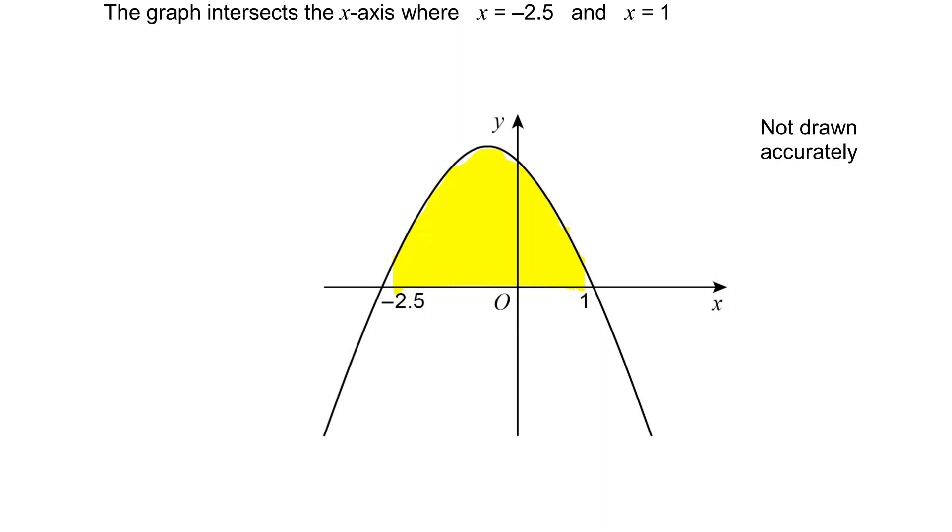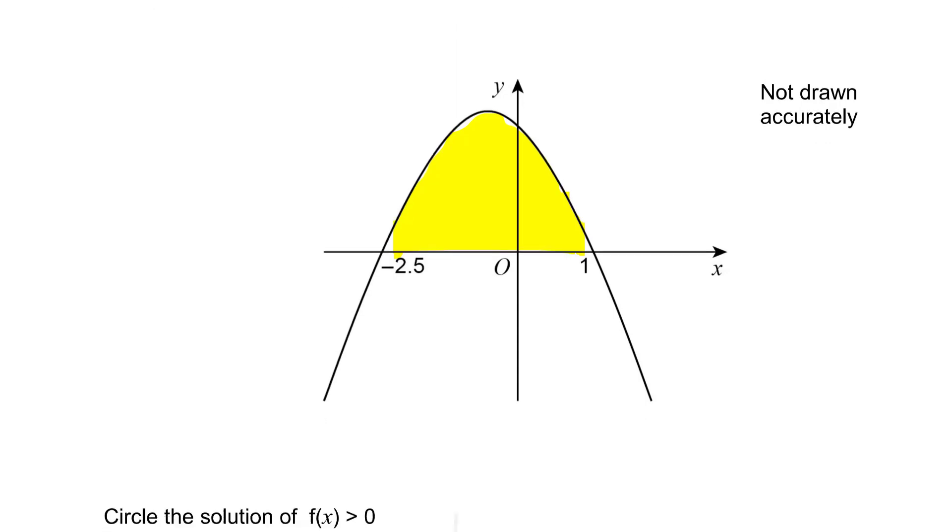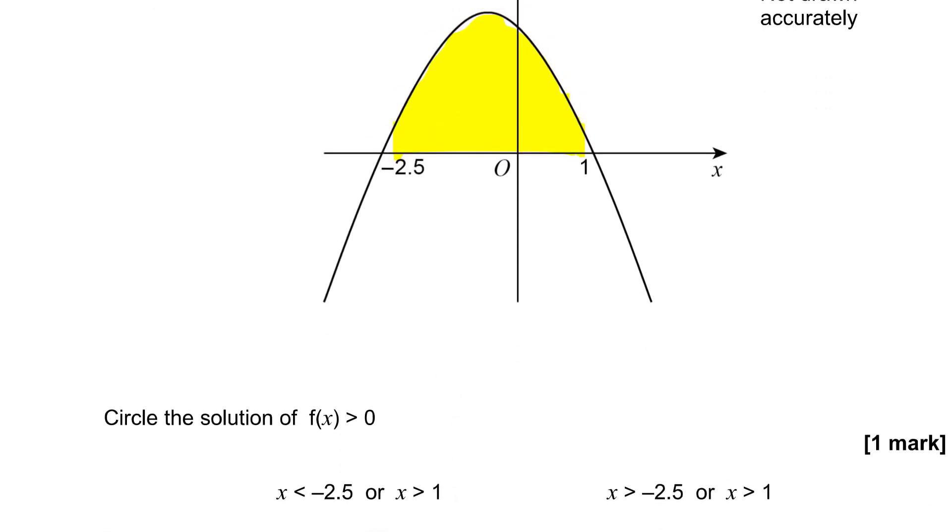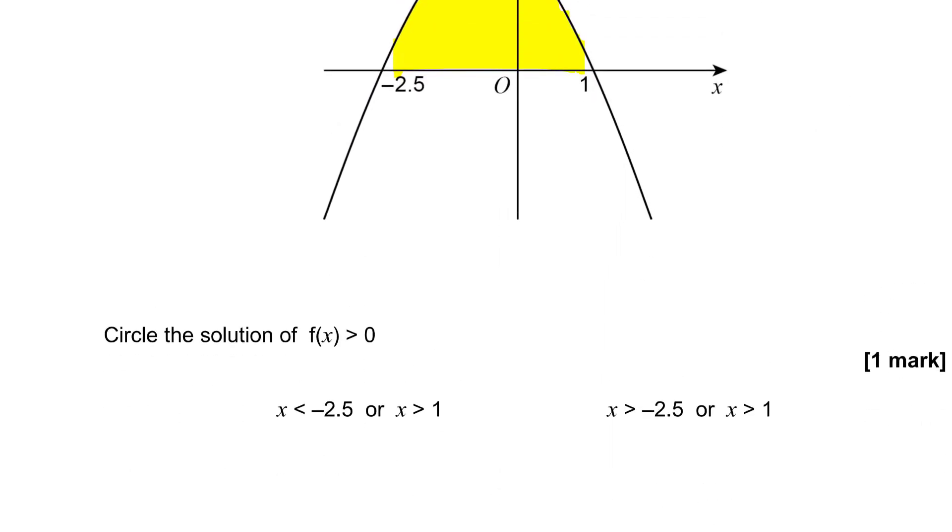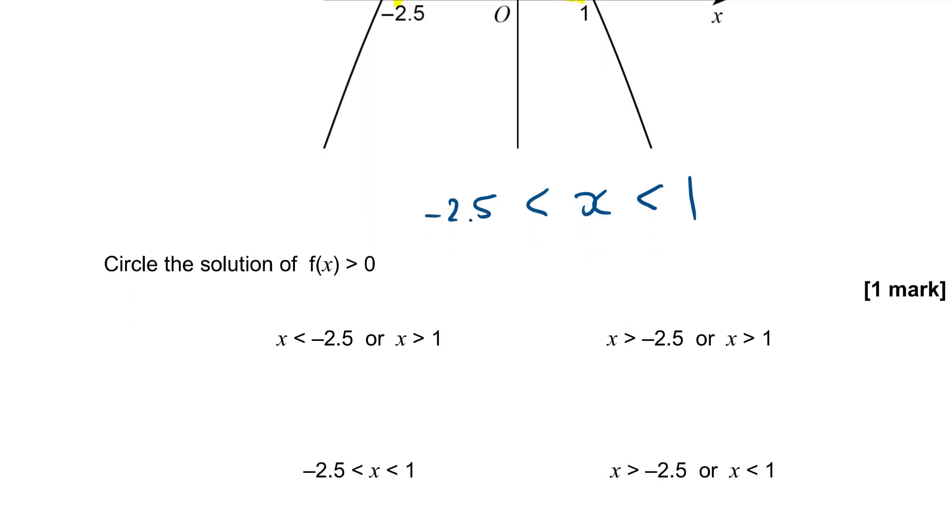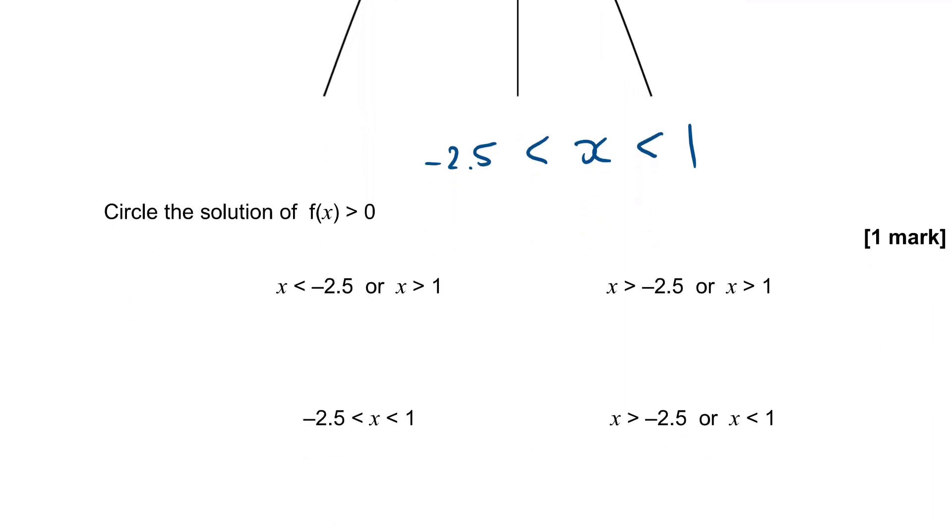But between minus 2.5 and 1, f of x is positive. So which boundary is it? Our value of x has to be bigger than minus 2.5. Can't be equal to 2.5 because then it would be equal to 0, and it's strictly greater than 0. And it must be strictly less than 1. So we want x between minus 2.5 and 1, which is that one there.